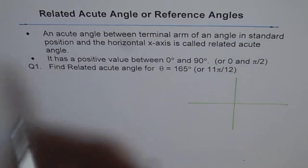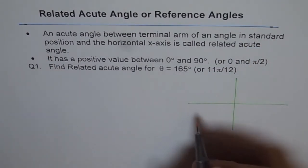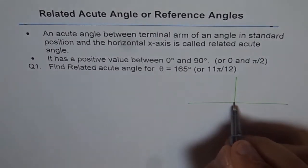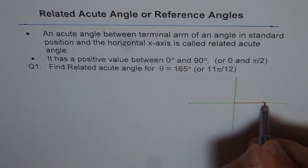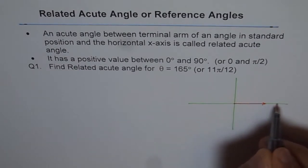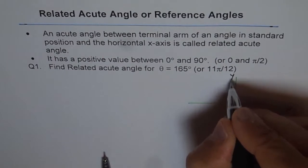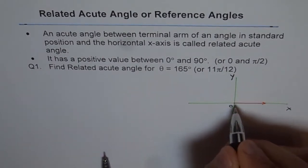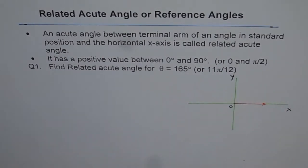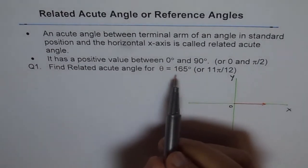So what is the meaning of standard position? In standard position means that the initial arm is along x-axis. So this is my initial arm along x-axis. This is x-axis, this is y-axis. That's our 0 origin. Now, and then we move θ, 165 degrees.